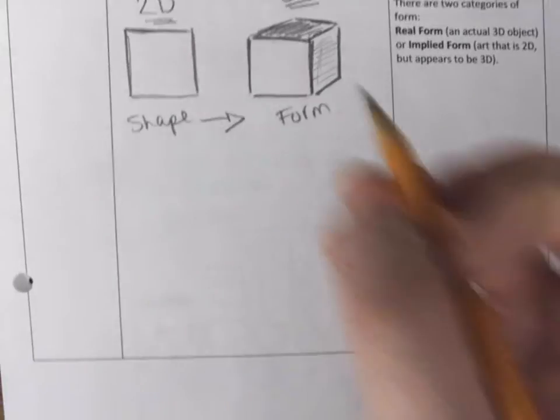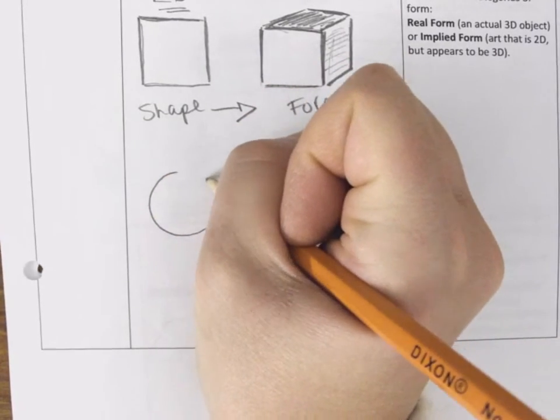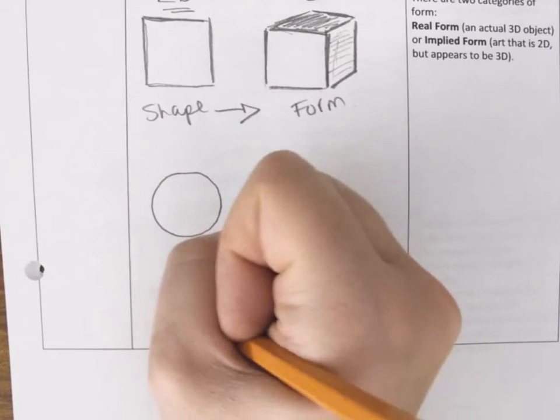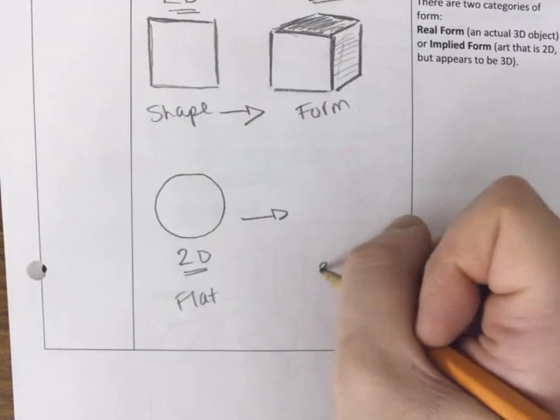Okay, we could try it with a sphere. Again, if you have no idea how to shade, don't worry about it, but you could have taken something like a circle, which is 2D because it's flat. Okay? And we could make it 3D.